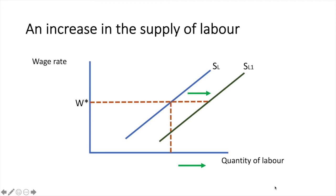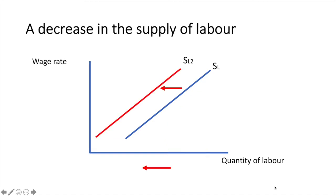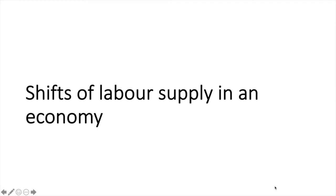Now at W star, Q1 labour is being supplied. Similarly for a decrease — a decrease in the supply of labour from SL to SL2 would lead to a reduction in the quantity supplied at wage rate W star; it would fall from Q star to Q2. Now that we see what the shift looks like, let's see why it happens.